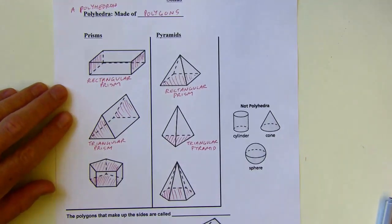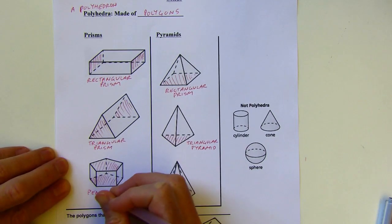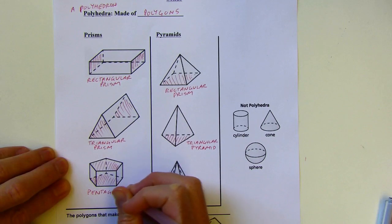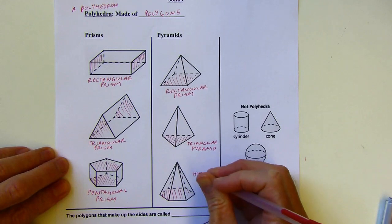And then we've got a triangular prism and a triangular pyramid. And then this would be a pentagonal prism.